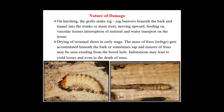The nature of damage: on hatching, grubs make zigzag burrows beneath the bark and tunnel into the trunk or main stem, moving upward and feeding on vascular tissues, interrupting nutrient and water transport. This causes drying of terminal shoots in early stages. A mass of frass or refuse accumulates beneath the bark, and sap with masses of frass may exude from the borehole. Severe infestation may lead to yield losses and even death of mango trees.